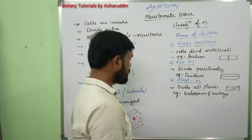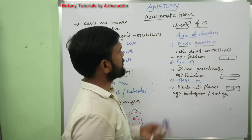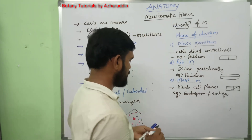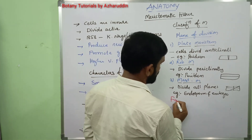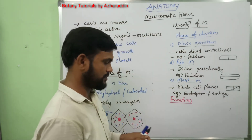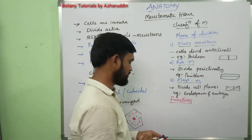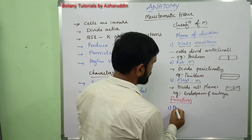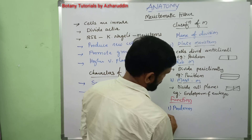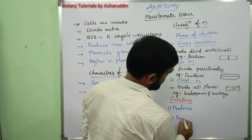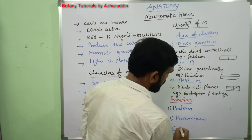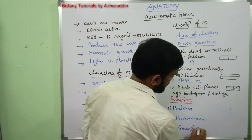Another classification of meristematic tissue is based on function. Based on function, meristematic tissue is divided into three types: first is protoderm, second is procambium, and third is ground meristem.